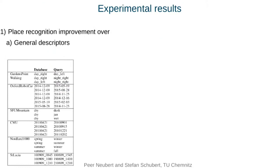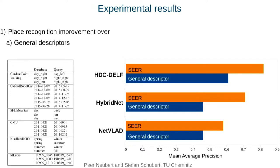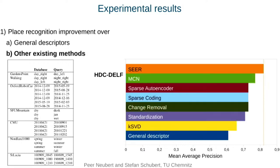We implemented and extensively evaluated this algorithm. There are six main insights from the experimental evaluation. The place recognition performance improves over raw general descriptors; we evaluated this on 23 sequence comparisons from six environments, and the mean average precision of SEER applied to NetVLAD is considerably higher than the general NetVLAD descriptor. Moreover, we can combine SEER with other descriptors like HybridNet or HTC-DELF, with considerable performance improvement in all cases. For the best descriptor HTC-DELF, SEER is also considerably better than other approaches for descriptor adaptation from the literature, and much faster than the follow-up approach.